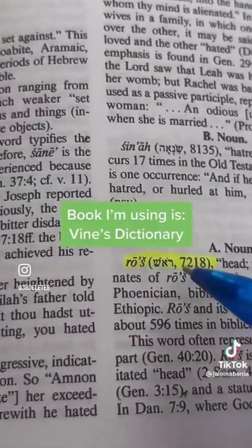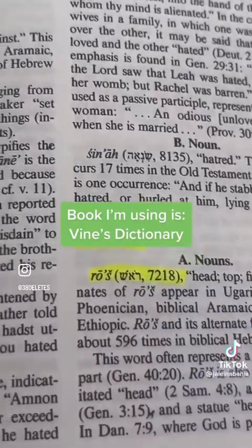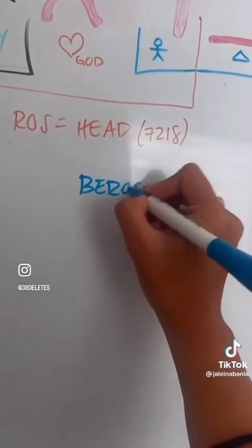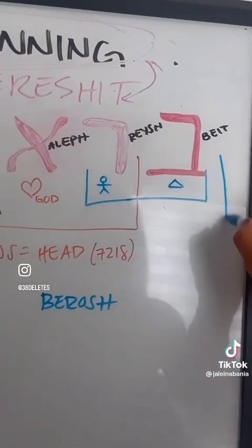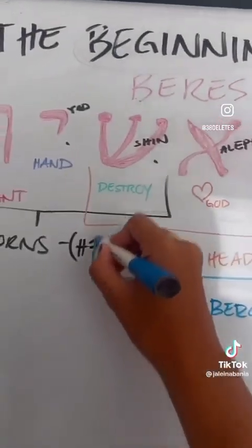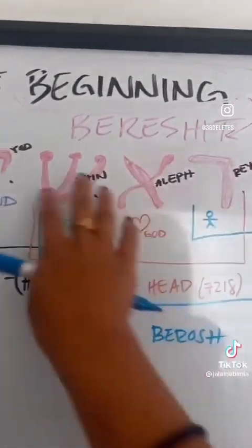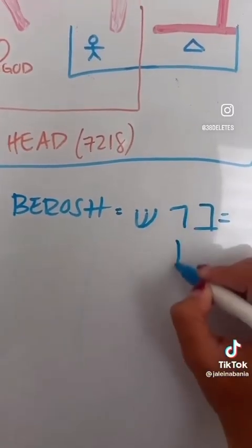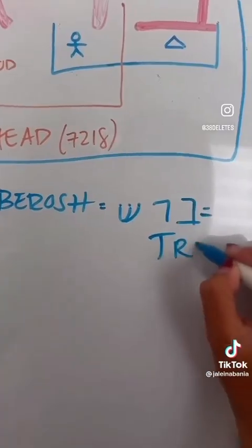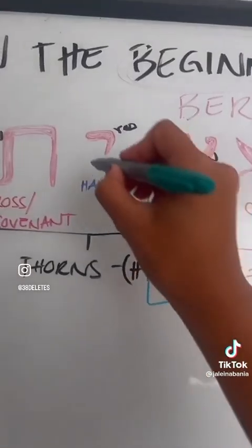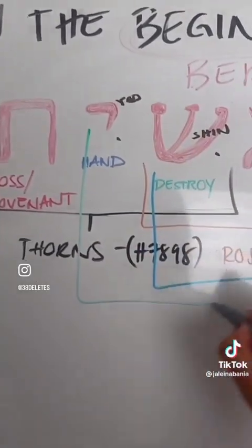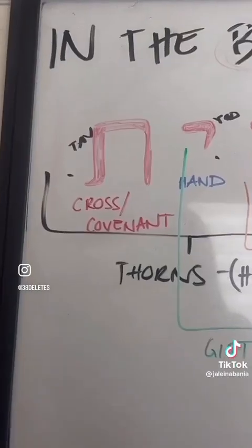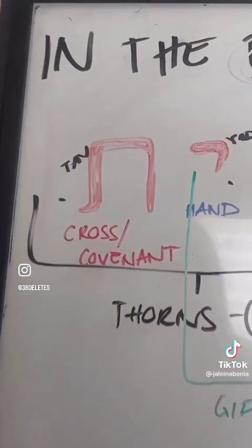So just to prove it, we've got Resh, Aleph, and Shin right there. The next word we're going to discuss is barosh, which is spelled with B, R, and Shin — so it's this, except for Aleph. This means tree — cypress tree, actually. These two together, the Shin and Yod, means gift. And again, Tav means cross or covenant.